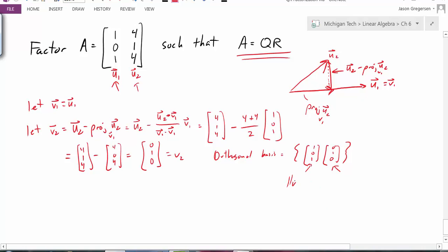So let's find the length of V1. It should be equal to the square root of 1 squared plus 0 squared plus 1 squared. That's the square root of 2.